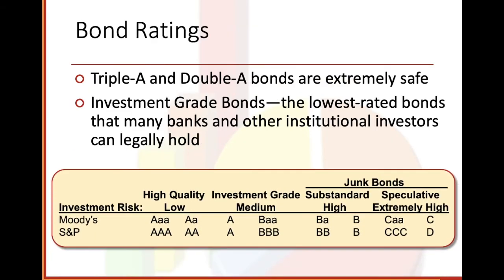Bond ratings: AAA and AA bonds are extremely safe. Investment grade bonds are the lowest-rated bonds that many banks and other institutional investors can legally hold. From what I remember, the Navajo Nation has a bond rated AAA. Moody's is the one that evaluates these. High quality means low risk — those are the A and AA categories. Then investment grade medium risk would be AA or BBB.